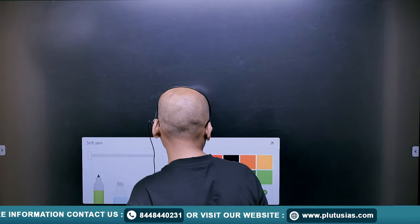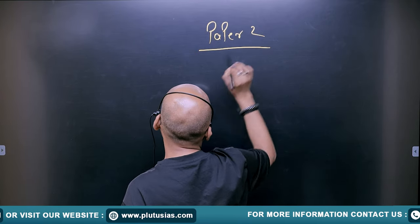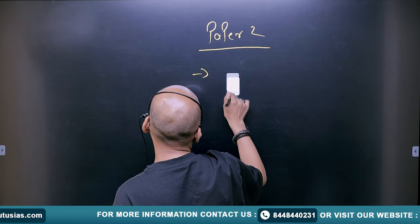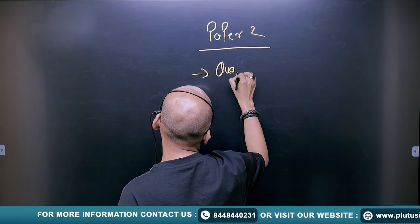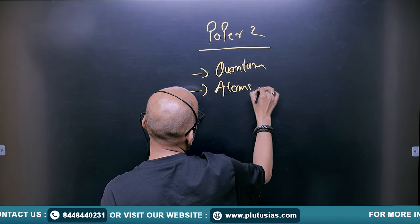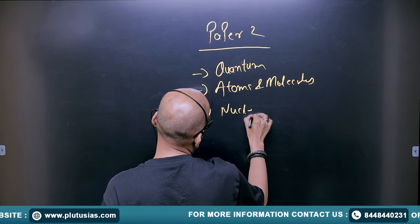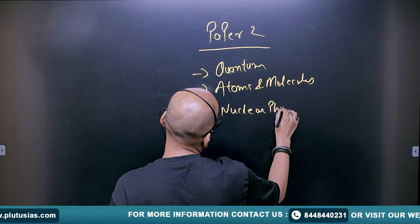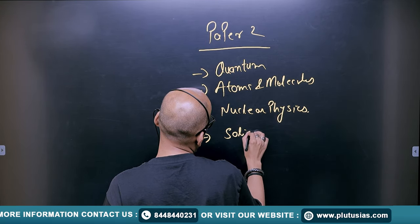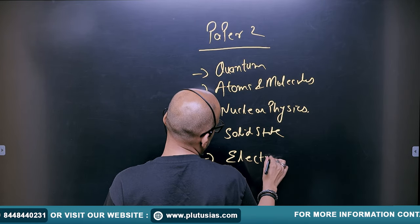Moving on to paper two, which is again of 250 marks. Paper two comprises of quantum mechanics, then you have atoms and molecules, nuclear physics, then solid state physics, and finally electronics.